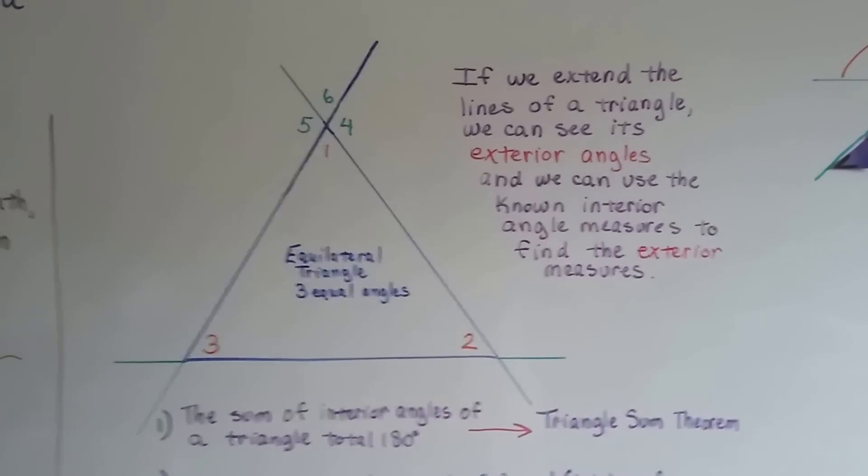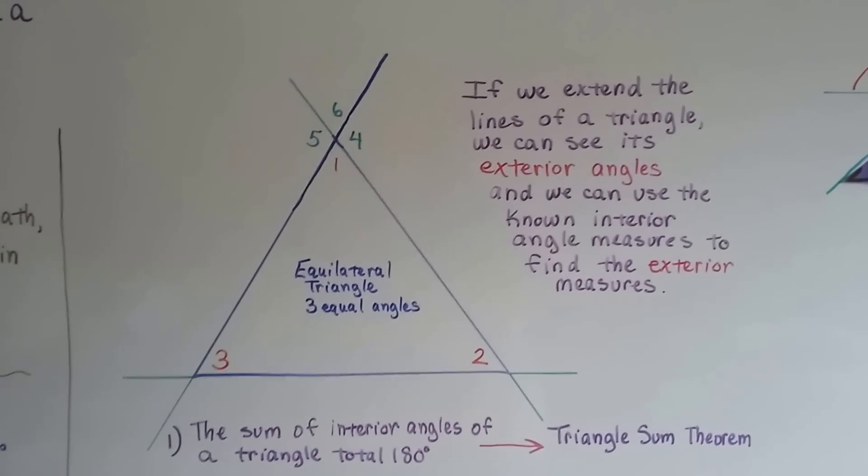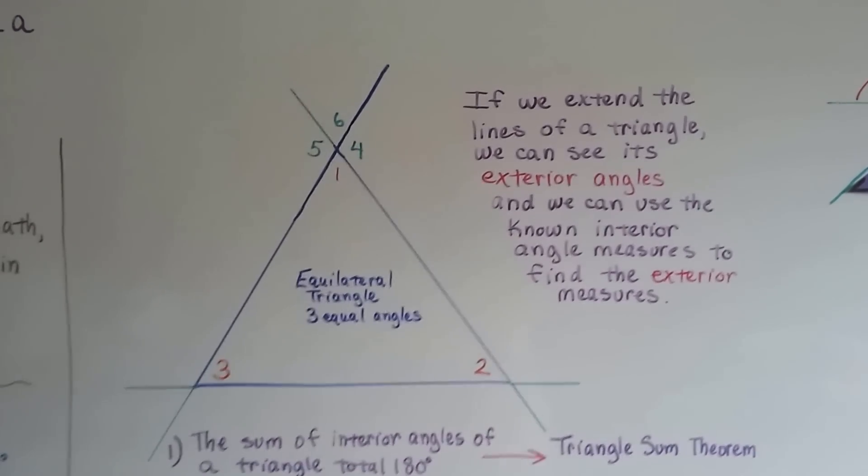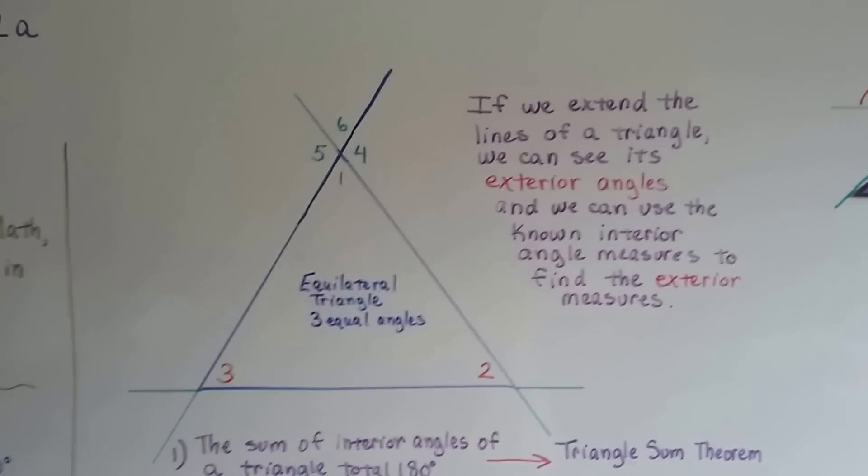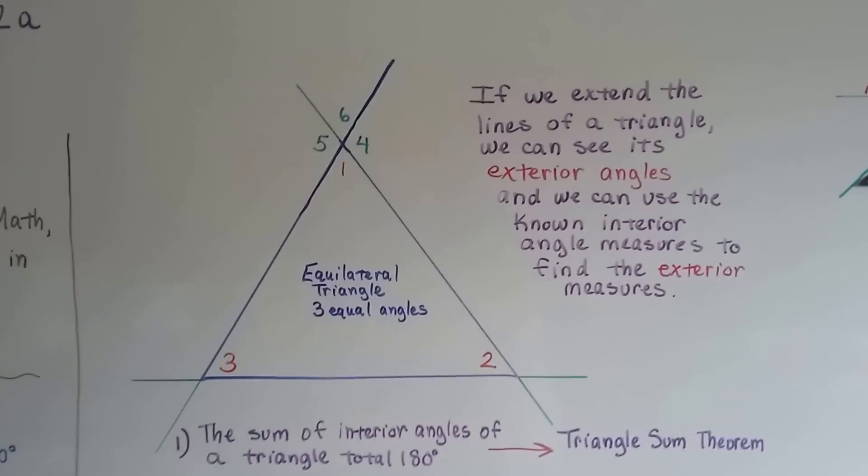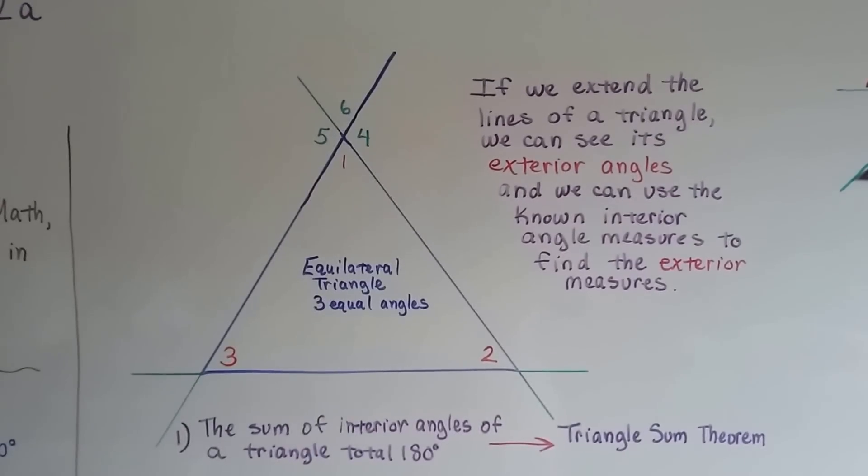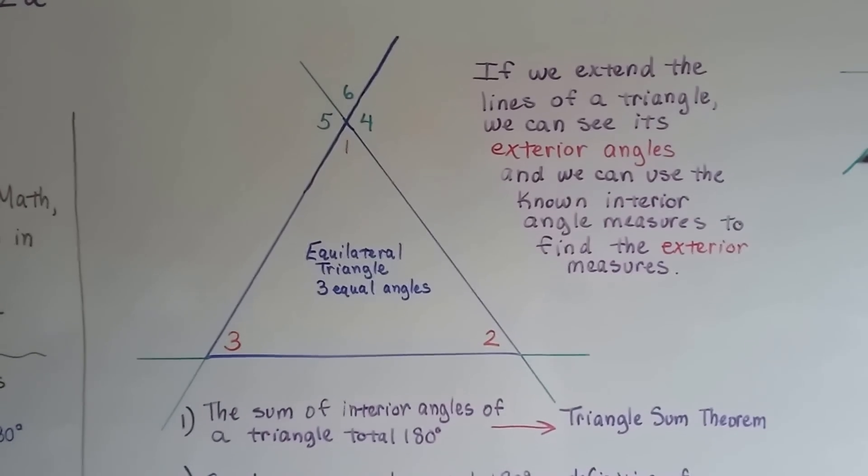When we extend the lines of a triangle, we can see the exterior angles, and we can use the known interior angle measures to find the exterior angle measures. So because it's an equilateral triangle, and all the insides are equal, we know that 1, 2, and 3 are 60 degrees, don't we?